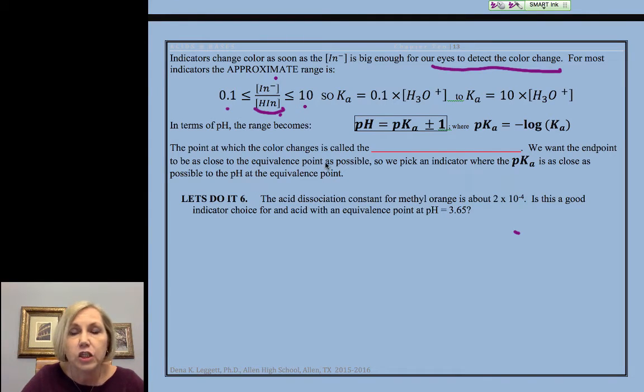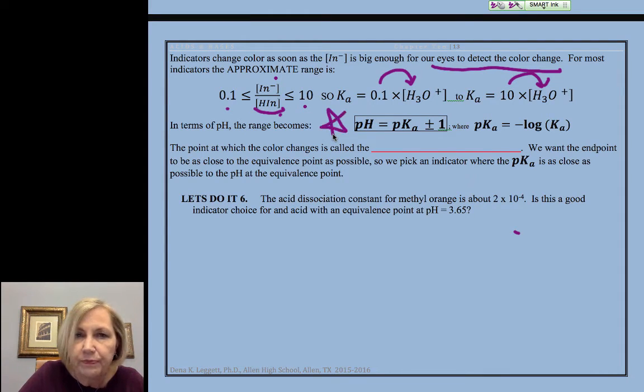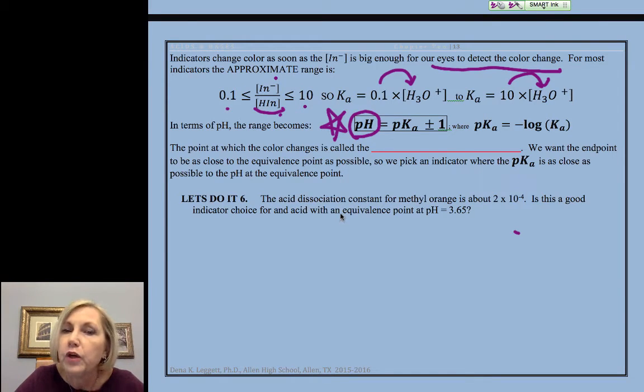Now, if we plug that into the Ka expression, that means our range is between 0.1 times the H3O+ and when Ka is ten times the H3O+. If I took the negative log of both sides, you're not going to have to do that. Here's the take-home. I wanted you to see why there was a range. When the pH is equal to, in terms of pH, the pKa plus or minus 1, that is the pH range where it's helpful, where it will indicate a color change for us.